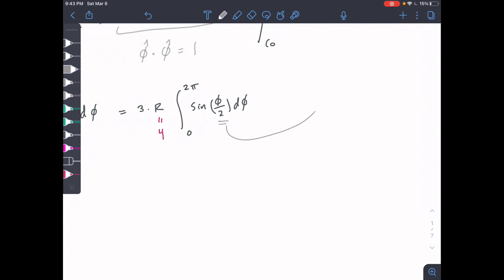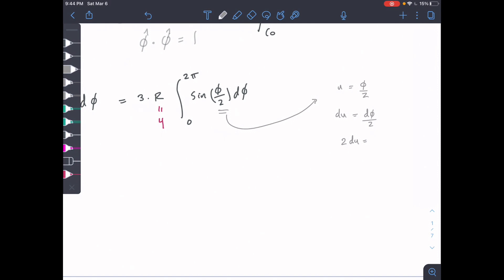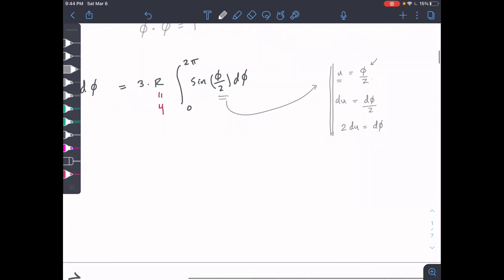Hopefully this should give you guys some calc 2 flashbacks right now. What we're going to do is plug in this u for phi, and then we're also going to change our bounds. Because we manipulated our phi by dividing it by 2 and now our variable is u, we need to manipulate our bounds by dividing them by 2.